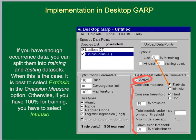First, if you have enough data in your occurrence points from the species you're trying to model, you can select the extrinsic option. The extrinsic option relies on having a subdivision of data provided to GARP, with enough data to subdivide into internal training and testing. For example, the species highlighted has 41 records — half used during model building and the other half used for evaluating models in the best subset procedure. This is called an extrinsic omission measure using real holdout data.